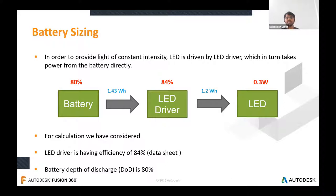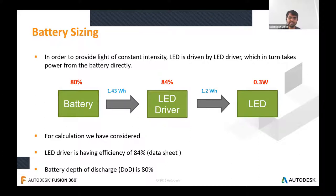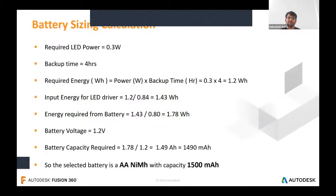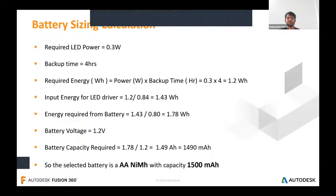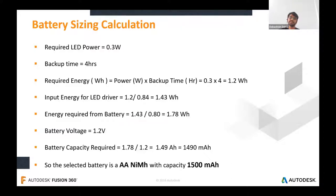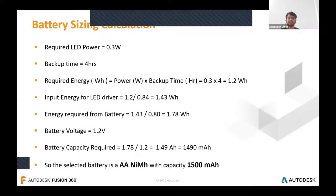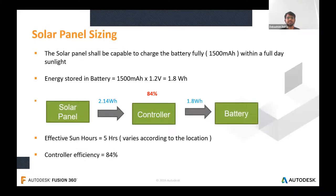So the energy to be stored in the battery is 1.43Wh divided by 0.8, which comes to around 1.78Wh. The double-A battery voltage is 1.2V, so the battery capacity required equals 1.78Wh divided by 1.2V, which comes to around 1490mAh. Taking the nearest value, that is 1500mAh — our battery selection is fixed: a double-A nickel metal hydride battery with a capacity of 1500mAh.